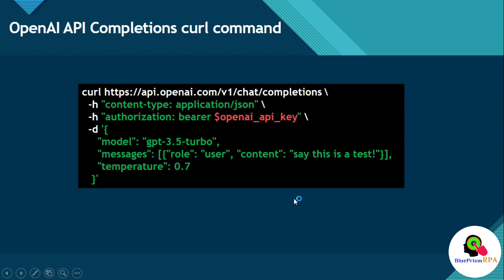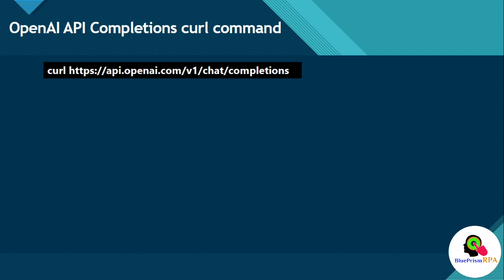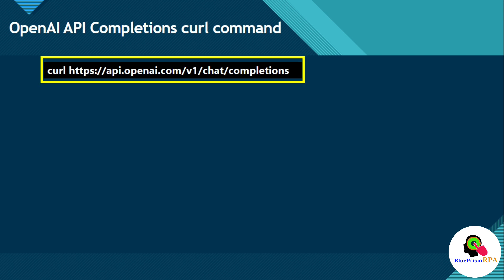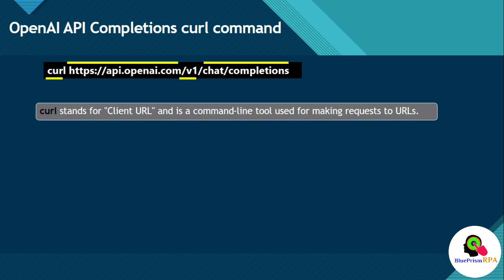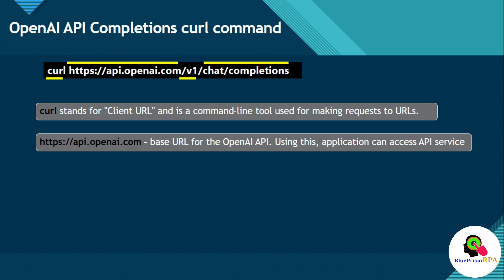Let me explain each term one by one. We have curl and then https://api.openai.com/v1/chat/completions. Curl stands for Client URL — C for Client and URL — and this is a command line tool used for making requests to URLs. api.openai.com is the base URL for the OpenAI API, and using this, applications can access the API service. v1 is the API version which is being used to make a request to the OpenAI API.